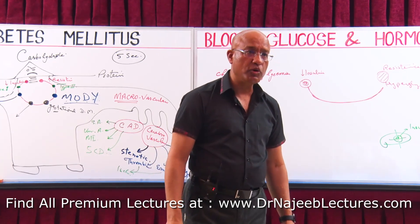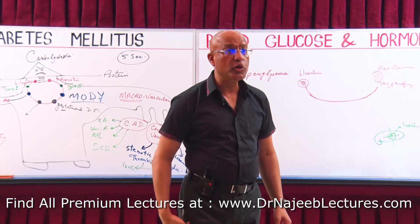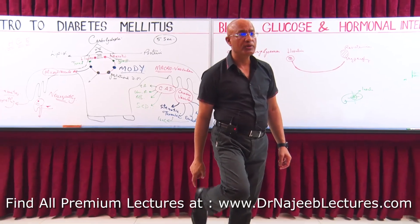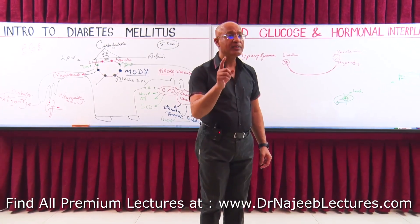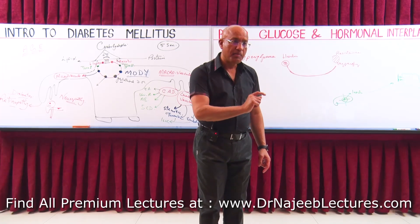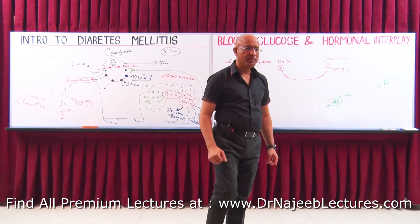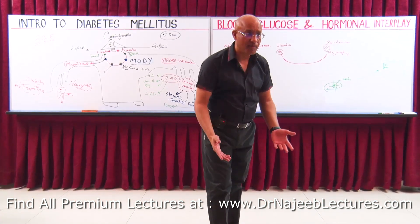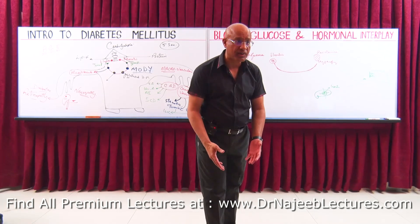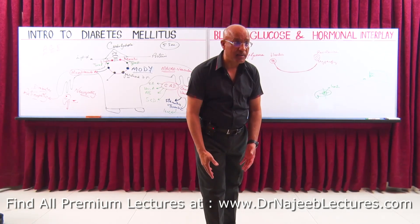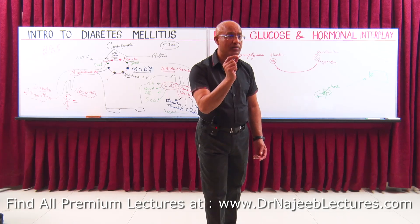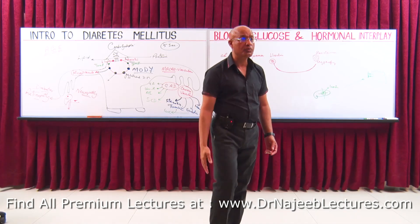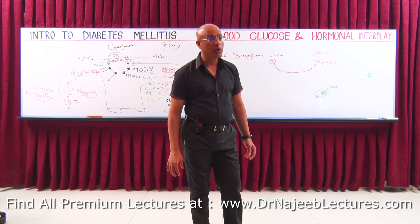As previously discussed, macroangiopathy in the lower limb produces ischemia to the foot and contributes to ischemic damage in diabetic foot. But if sensory nerves are also damaged, the patient might get a small injury and ignore it. That area may become infected, the infection may spread, and this small problem might eventually end up in amputation of some part of the lower limb.